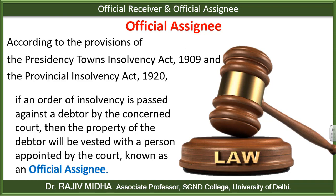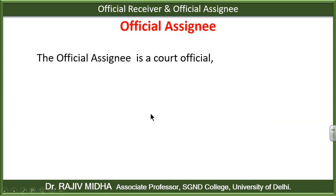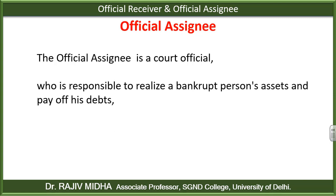Assignee का मतलब होता है सूप देना. Official Assignee means court ने इस व्यक्ति को एक काम सूप दिया कि तुम इसकी सारी संपत्ति अपने कबजे में कर लो, और इसके बाद उस संपत्ति का बटवारा ये व्यक्ति करेगा. The Official Assignee is a court official who is responsible to realize a bankrupt person's assets — उस व्यक्ति की सारी assets को अपने कबजे में ले लेगा, उन assets को realize करेगा, उन assets को market के अंदर बेचेगा, and pay off debt — और उस व्यक्ति के creditors को payment करेगा.